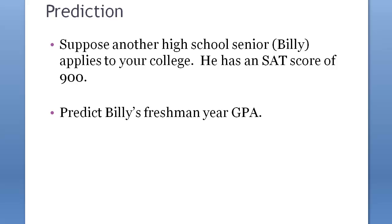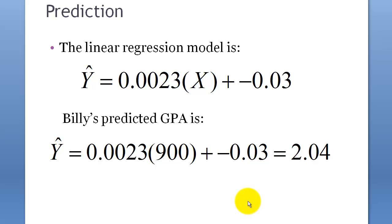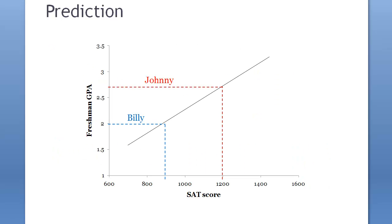Suppose Billy, another high school senior, applies to your college. He has an SAT score of 900. Let's predict Billy's freshman year GPA — it's 2.04. Of course it's lower, because it's based on this regression model relationship. The result is 2.03.